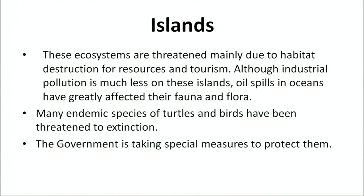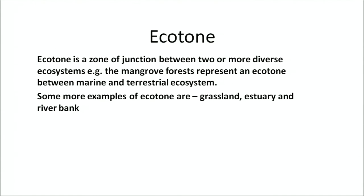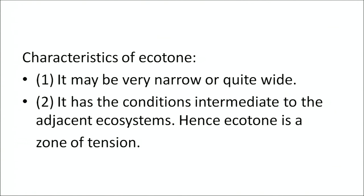Although industrial pollution is much less on islands, oil spills in the oceans have greatly affected the fauna and flora of islands. Many endemic species such as turtles and birds have been threatened with extinction. The government is taking special measures to protect these islands. An ecotone is a zone of junction between two or more diverse ecosystems. For example, mangrove forests represent an ecotone between marine and terrestrial ecosystems. Other examples of ecotones are grasslands, estuaries, and river banks. An ecotone may be very wide or very narrow, and is also known as a zone of tension.